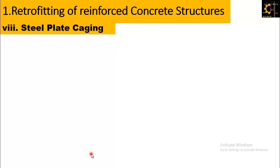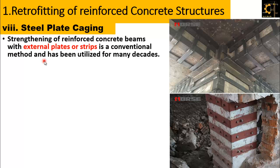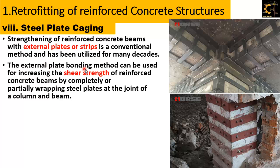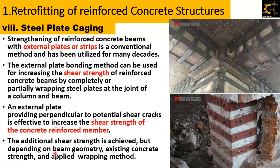The eighth technique of retrofitting is steel plate caging. Strengthening of reinforced concrete beams with external plates or strips is a conventional method that has been utilized for many decades. Steel plates are placed around the column to increase its strength. The external plate bonding method can be used for increasing the shear strength of reinforced concrete beams by completely or partially wrapping steel plates at the column-beam joint. Additional shear strength is achieved depending on beam geometry, existing concrete strength, and the applied wrapping method.